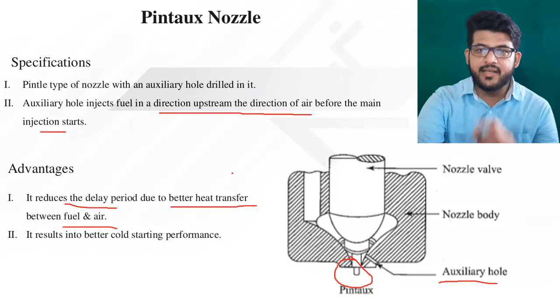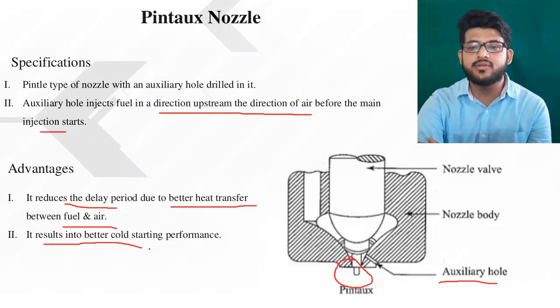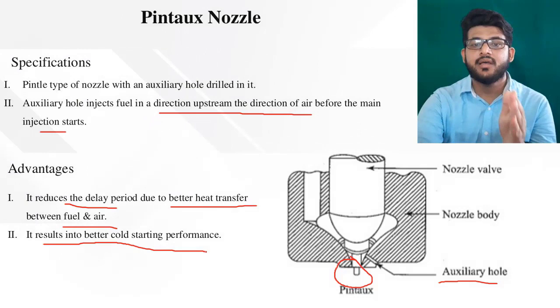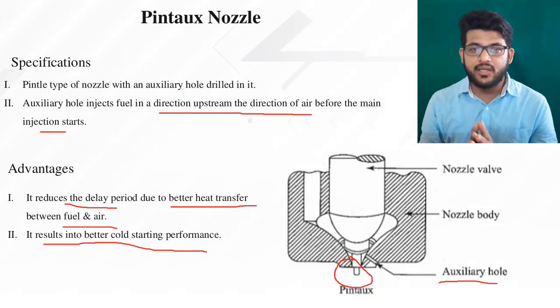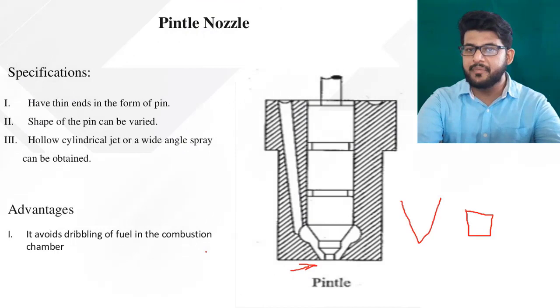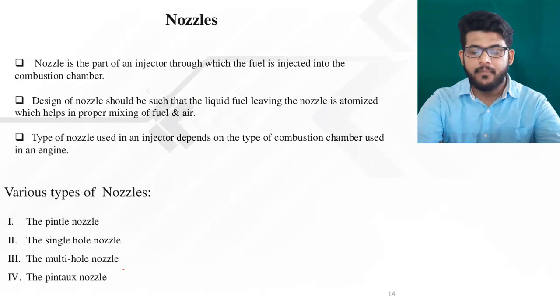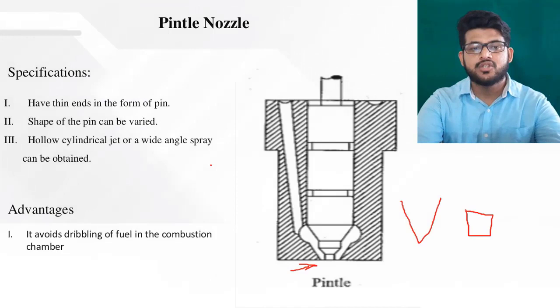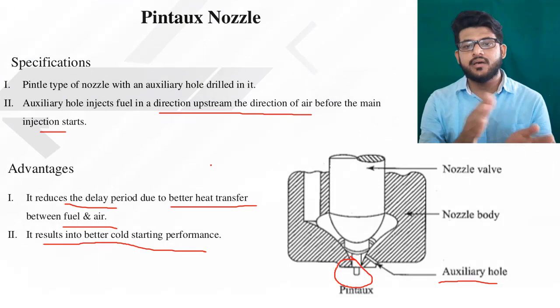The pintaux nozzle is different from all other nozzles and is very useful for reducing ignition delay. It also results in better cold starting performance because we are providing extra fuel, making the air-fuel ratio rich in cold starting conditions, so the vehicle starts faster than with other nozzles. To summarize, the four nozzles are: pintle, single hole, multi-hole, and pintaux. All these nozzles work depending on the type of combustion chamber. In the next session, we will see different types of mechanisms in a diesel engine.